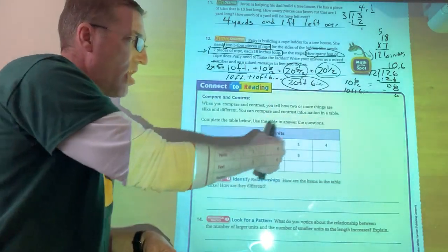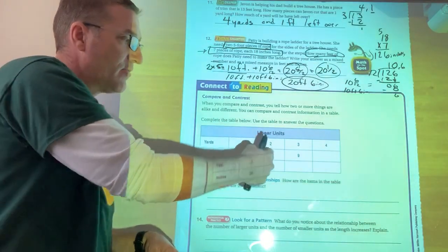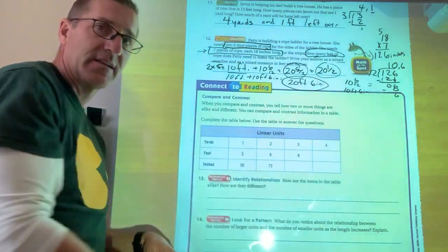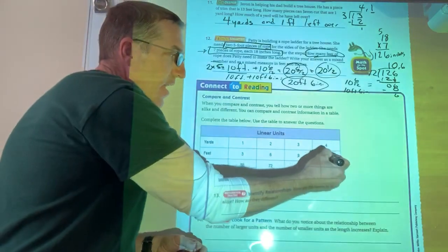Every time I add a yard, how many feet am I adding? Three feet, right? So I'm adding three going this way and I'm adding 36 going that way. So this is three, six, nine, 12, right?